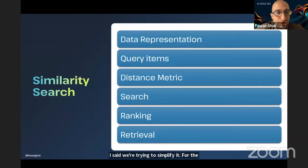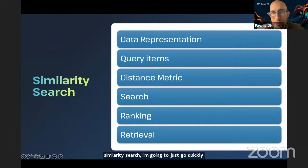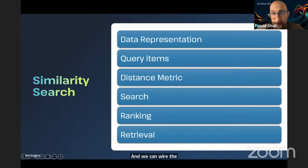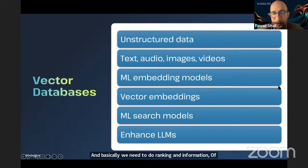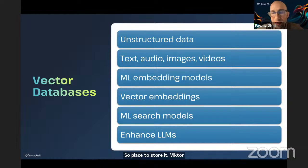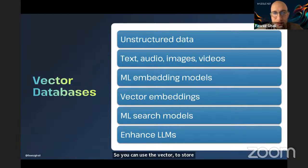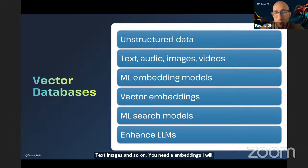For similarity search and vector databases, if you're new to similarity search: we're trying to have a data representation for unstructured data. We acquire the unstructured data after encoding it through vectors or embeddings, and then we do ranking and information retrieval. You need an architecture to store it — vector databases are great for this, but vector databases are missing the real-time element. You can use vector databases to store unstructured data like text and images. If you need ML embeddings, I will show you today in the Jupyter Notebook, and then you can do vector similarity.